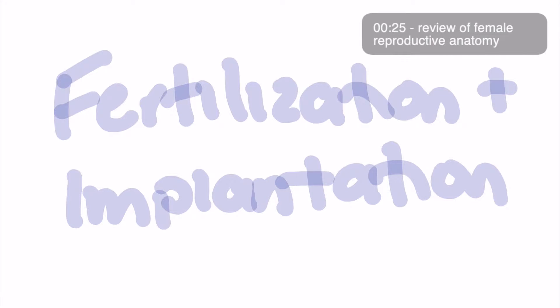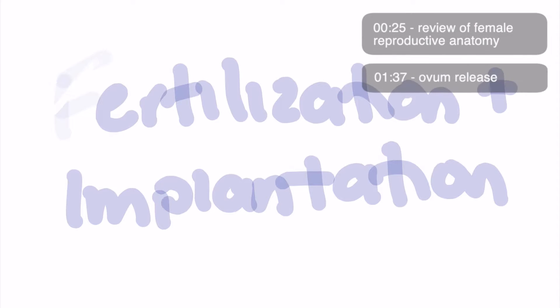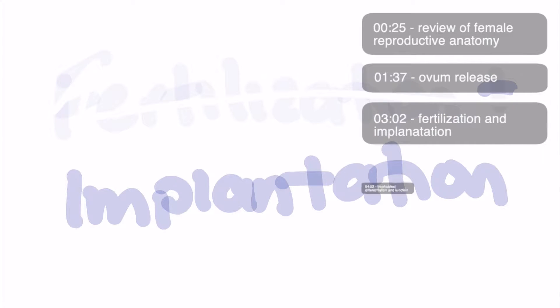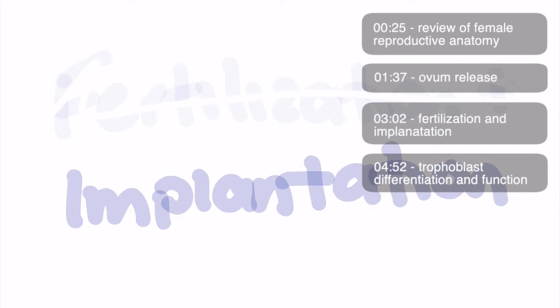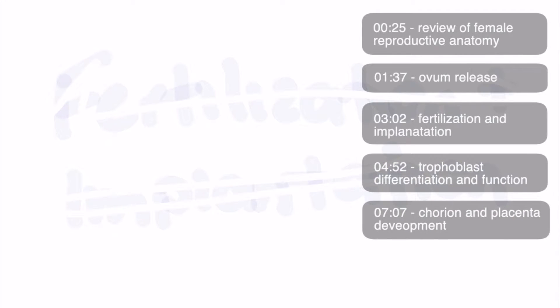Welcome back. In this video we're going to take a look at fertilization, implantation, and the development that occurs following implantation. I've added timestamps so you can skip through as needed. These include a review of female reproductive anatomy, the physiology of ovum release, fertilization and implantation, a review of trophoblast differentiation and function, and a thorough look at chorion and placenta development.